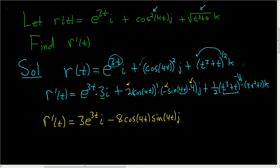And over here, let's bring this 1 half, and we can write it as a square root. So this is plus 3t squared plus 1 over 2 square root t cubed plus t, and we still have the k.